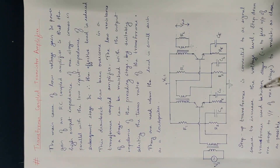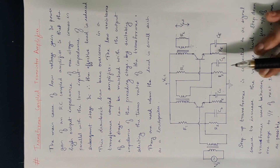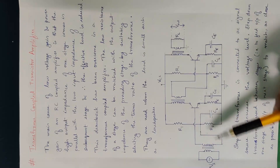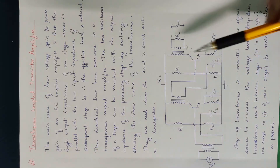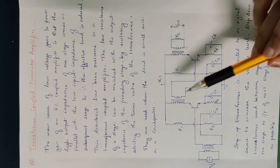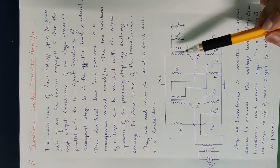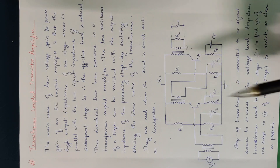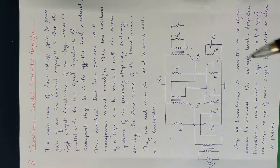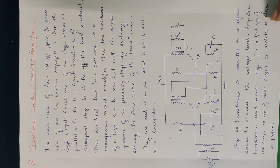The step-up transformer is connected to an AC signal source to increase the voltage level. The step-down transformer is used between stages to feed the output of one stage to the input of the next stage. Impedance matching is needed as close as possible.